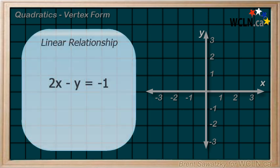If you were provided this equation, 2x minus y equals negative 1, and asked what it might look like as a graph, well, we recognize it as linear, but looking at the equation in its general form doesn't provide any easy clues for visualizing the graph.